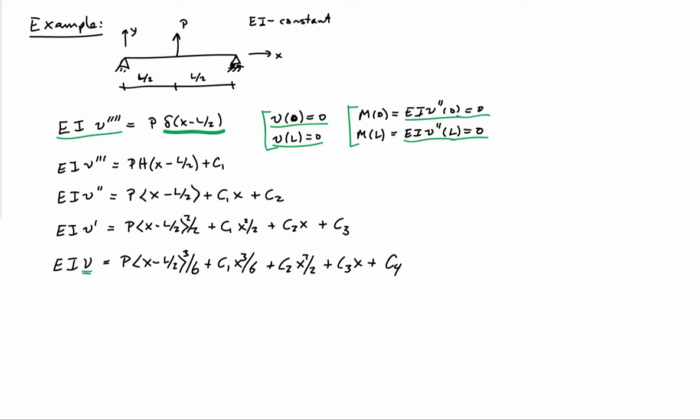That comes through a little bit of practice. But we'll go ahead and we'll start with looking at v of 0 equals 0. And that immediately tells me that c4 equals 0. If I apply the boundary condition of the moment equals 0 at x equals 0, I immediately find out that c2 equals 0.